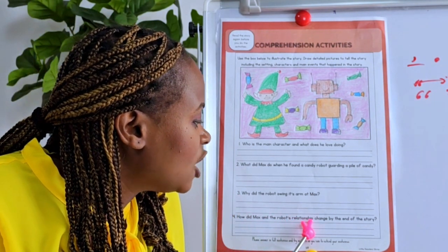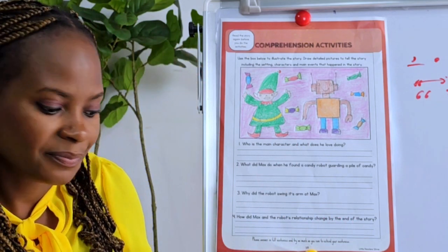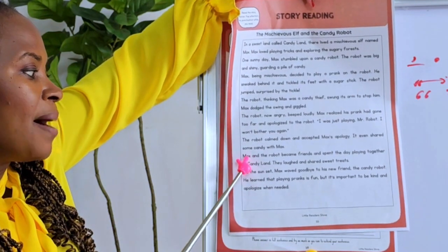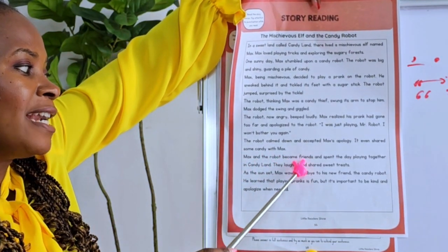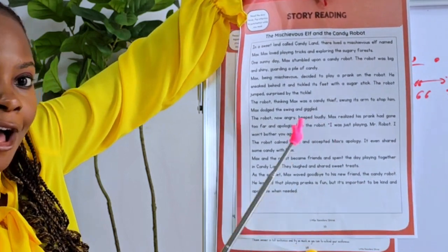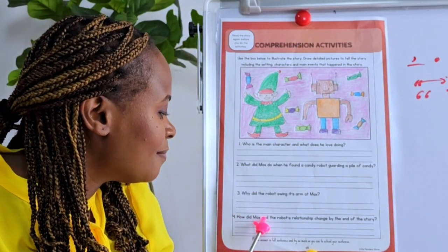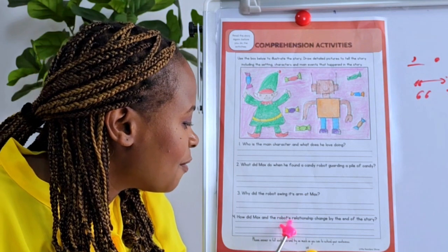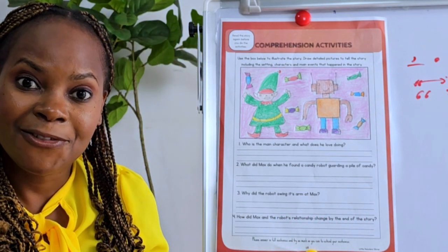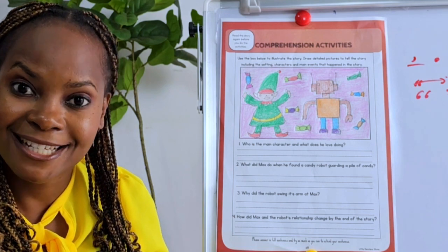'Max and the robot became friends and spent the day playing together.' That's our answer. How did Max and the robot's relationship change by the end of the story? They became friends and spent the whole day playing together. That's it!